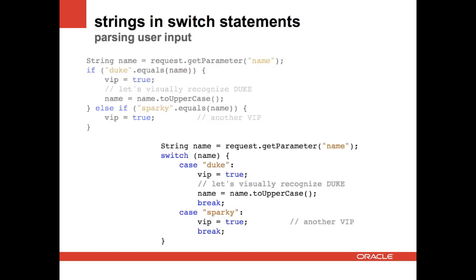The way that could be refactored to use the new Project Coin feature is: still get the parameter name, then switch on that variable with typical cases and breaks. In the case of Duke, it is a VIP — we uppercase and break. If it's Sparky, it's just a VIP and then we break. You're welcome to keep using the existing if/else if/else statements, but I think it's a bit more readable using the switch syntax.